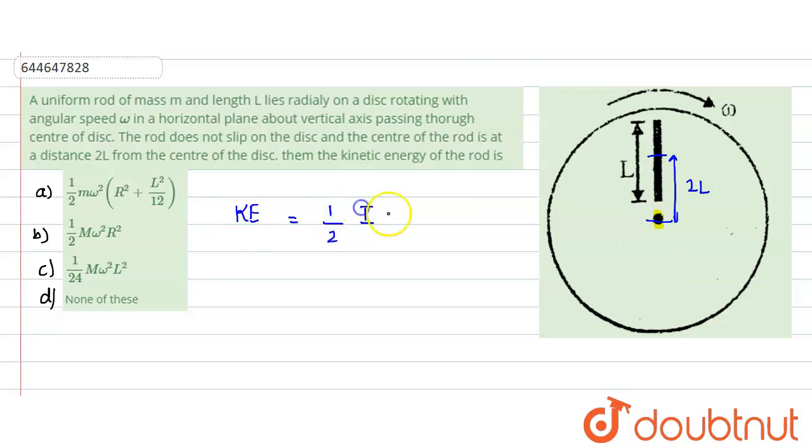But this moment of inertia about what? We can say that it is about the center of this, we can say that it is about c. Now we know the moment of inertia of rod about its own center. Let's call this to be o, let's call the center of the disc to be o and its center to be c.